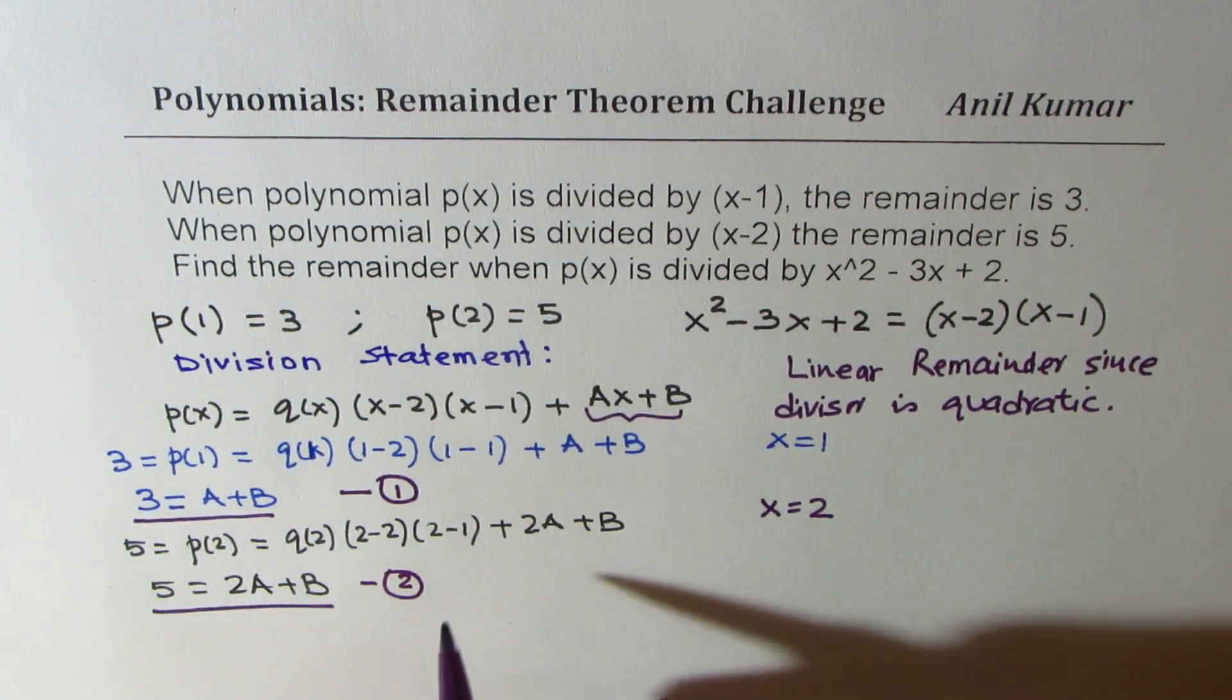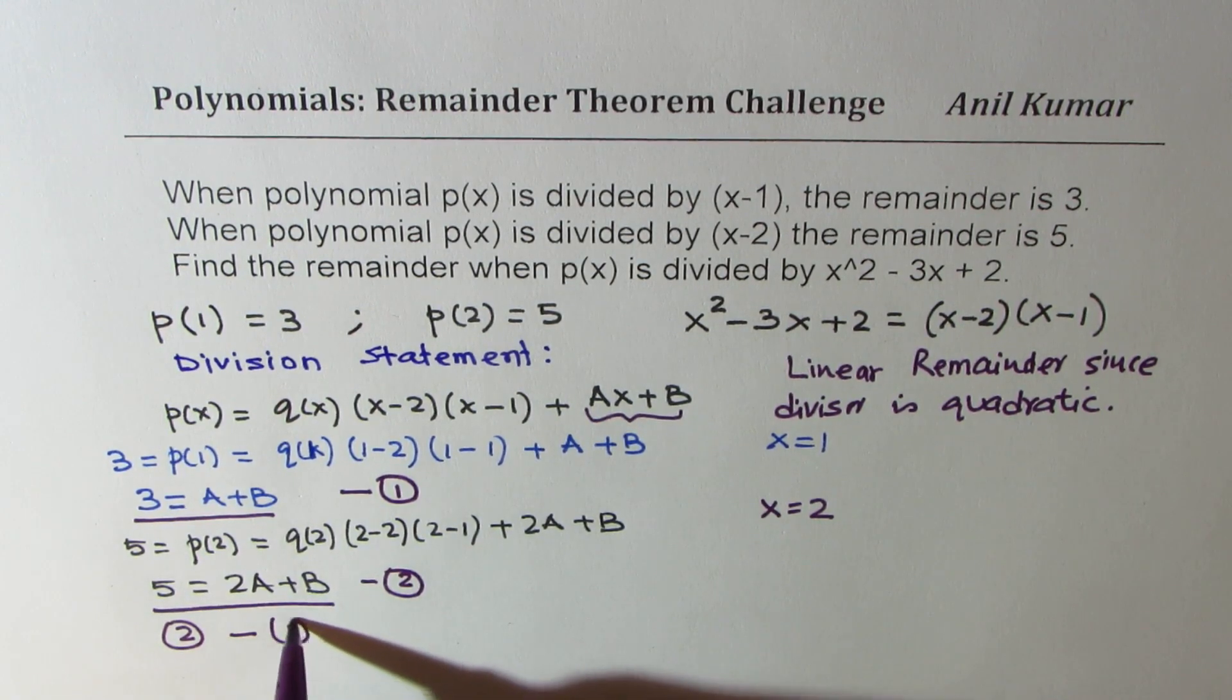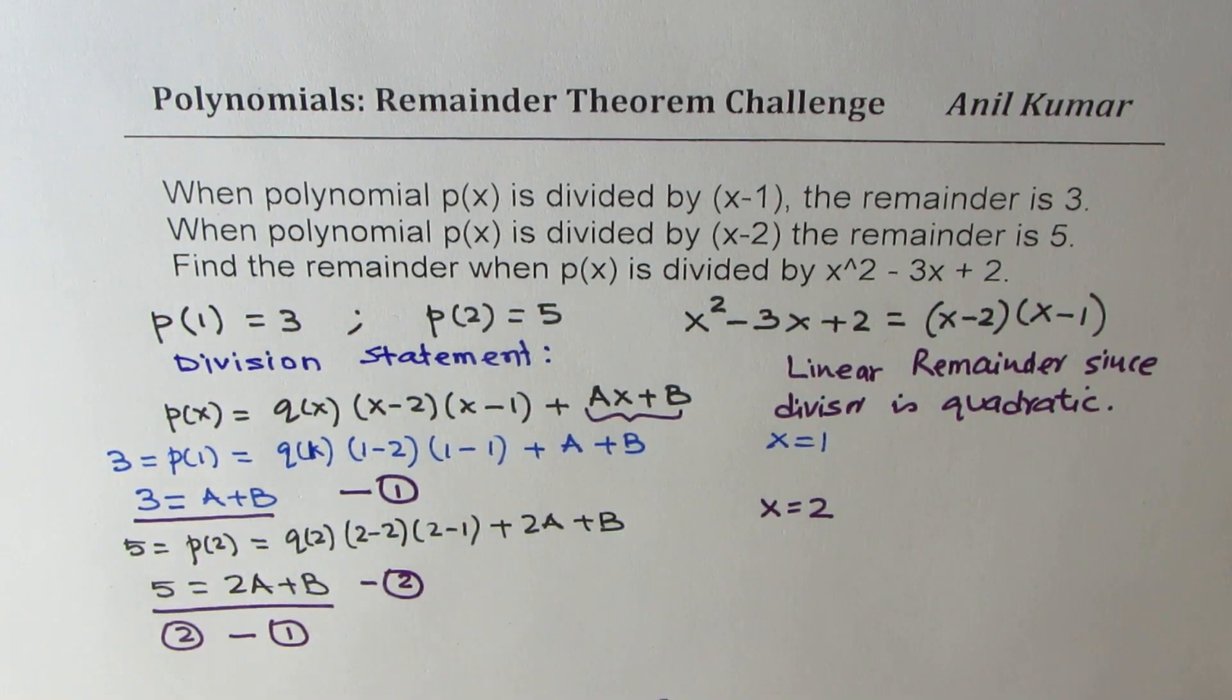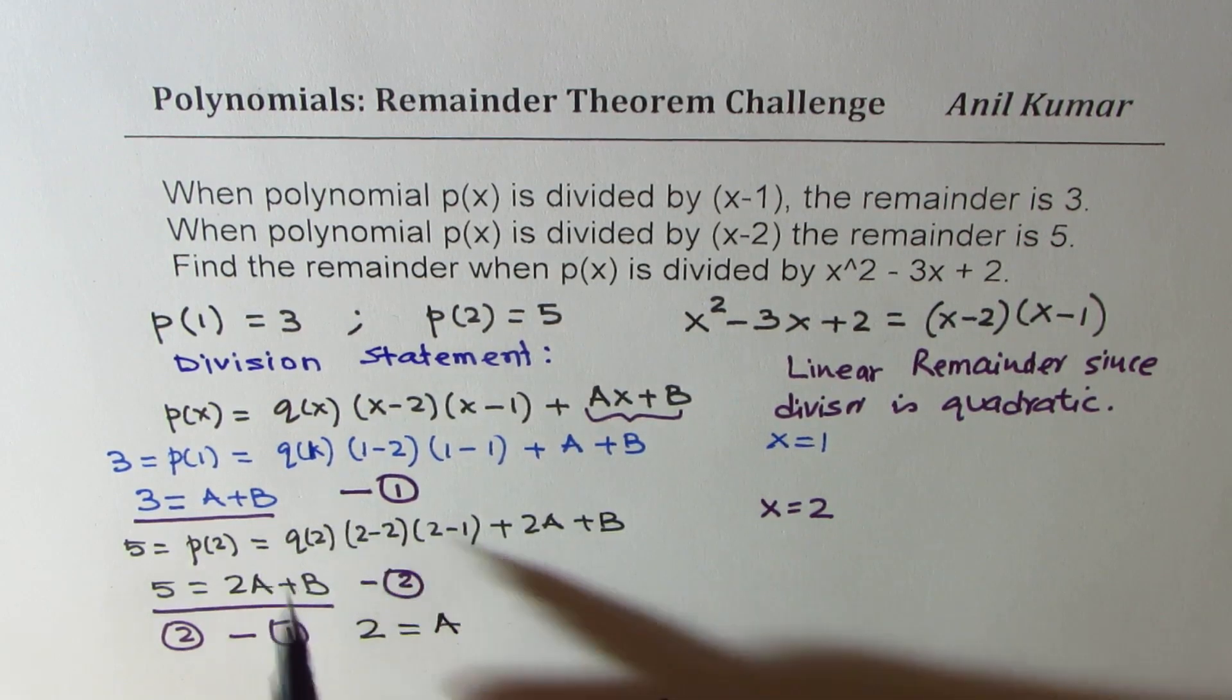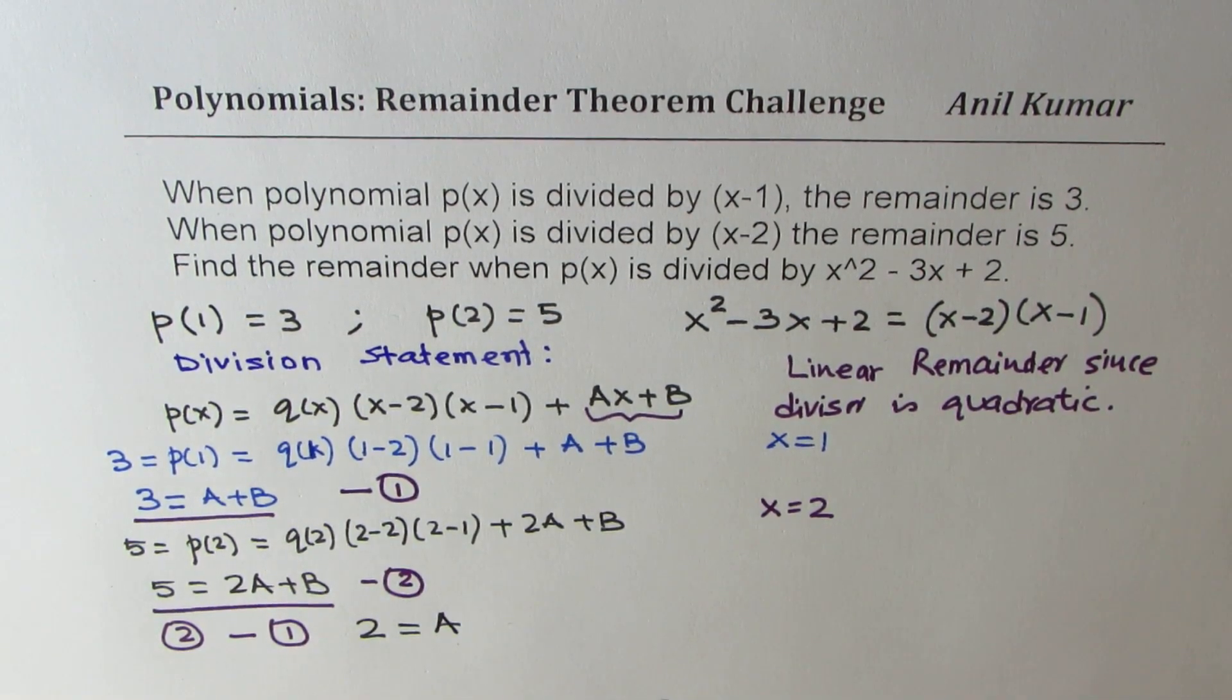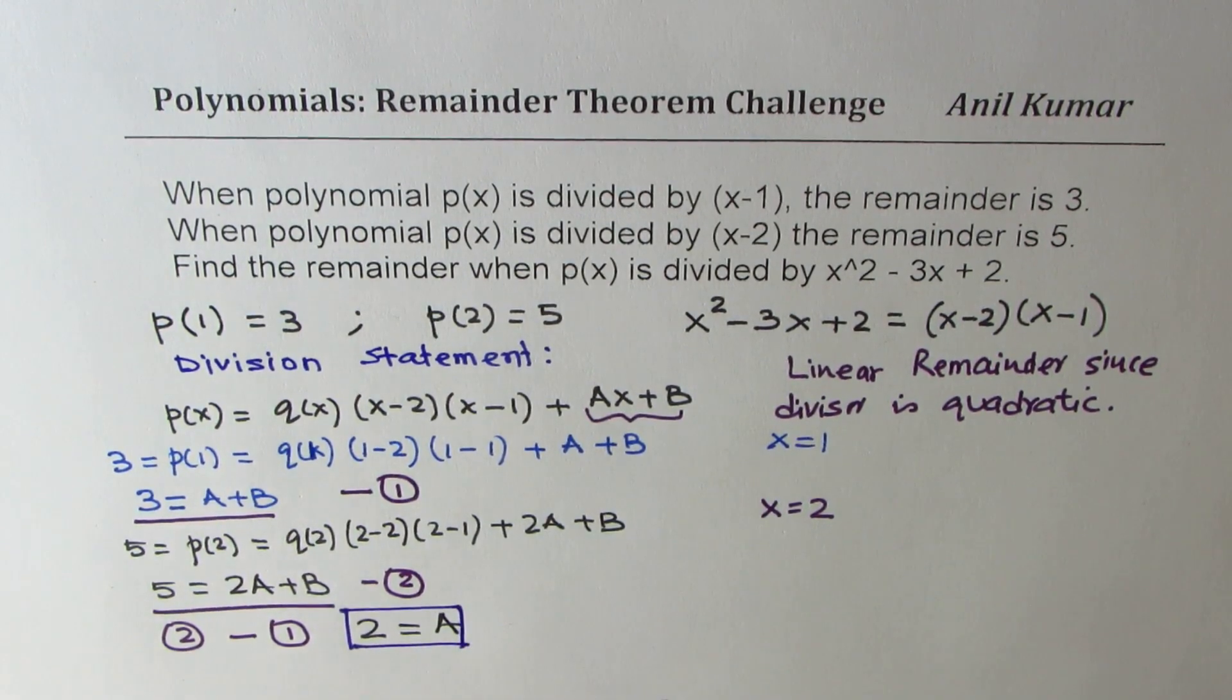What happens if I do equation 2 take away equation 1? So if I do equation 2 take away equation 1, 5 take away 3 is 2, 2A minus A is A, B minus B is 0. So we get the value of A as equal to 2. Perfect.